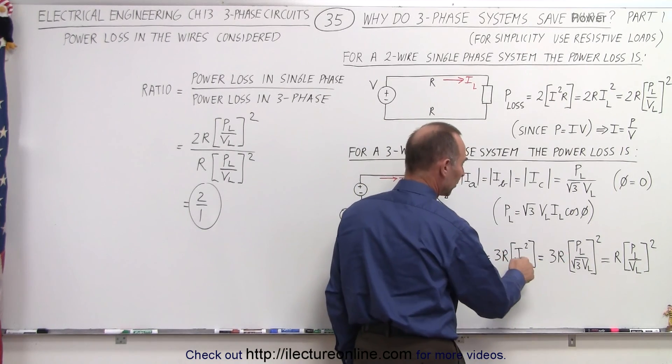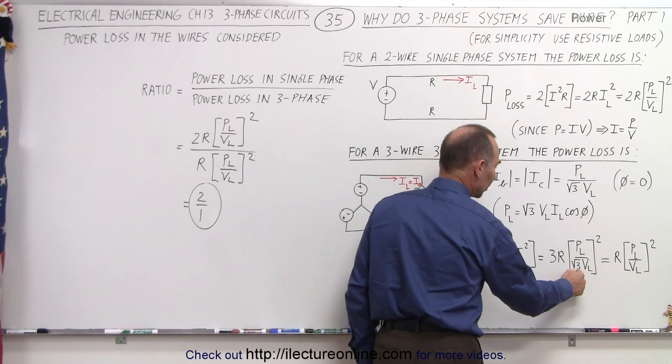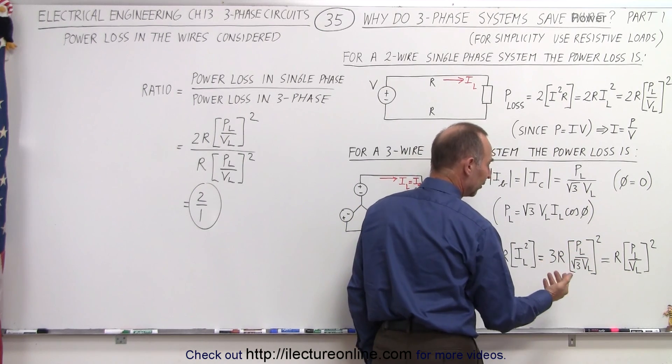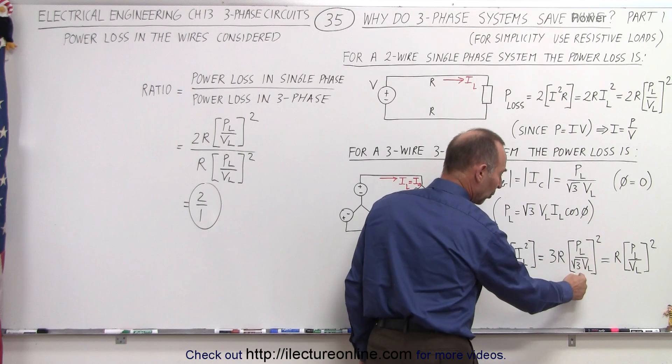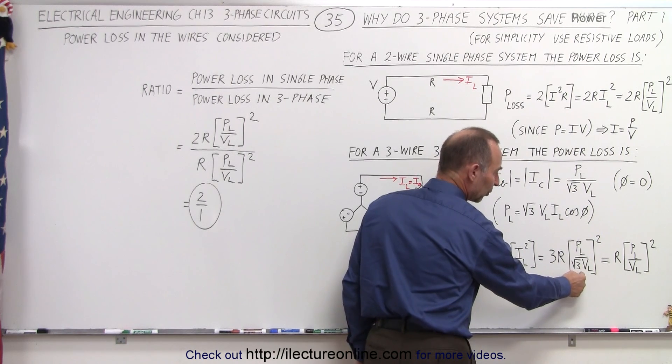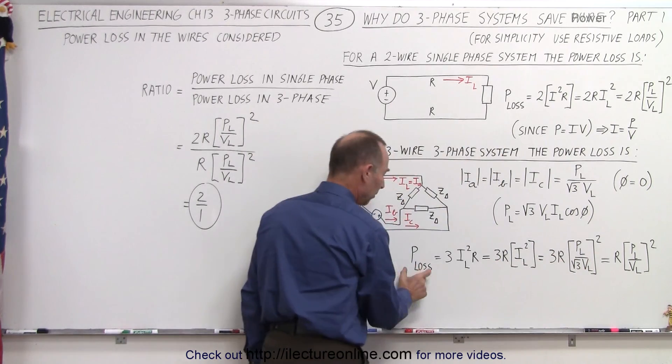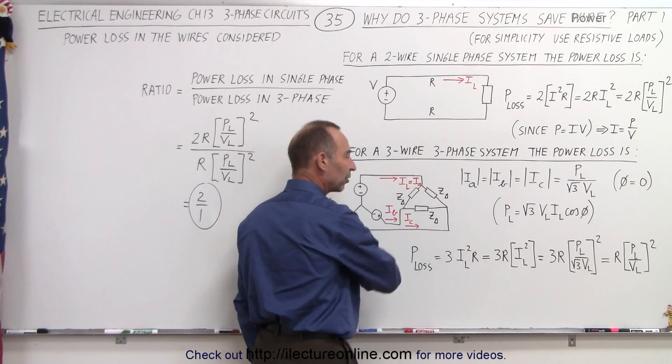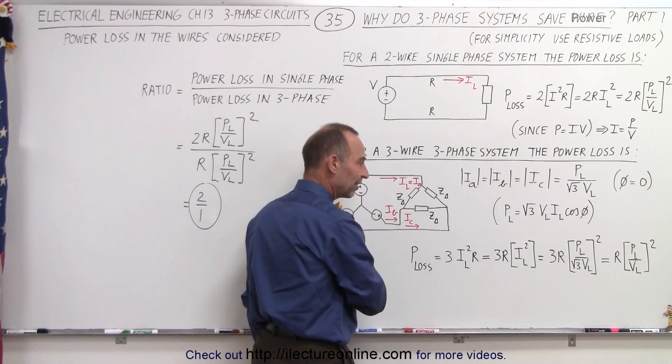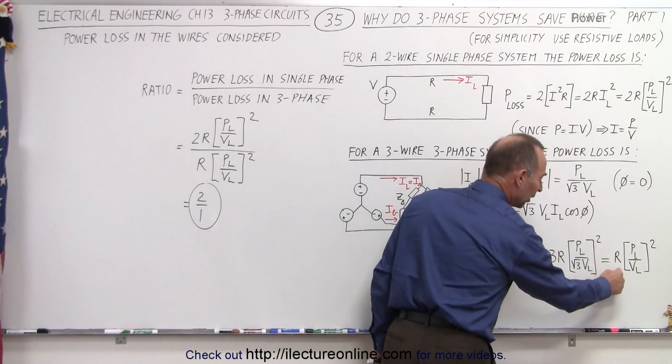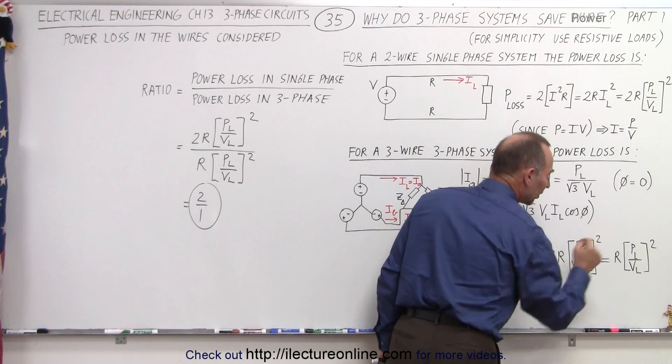And I, again, as before, can be written as P divided by the square root of three times V. And therefore, you can see that when we square this, we square the square root of three in the denominator, which would then cancel out the three here. And we end up with the power loss in a three-wire system, a three-wire, three-phase system is equal to R times P over V quantity squared.